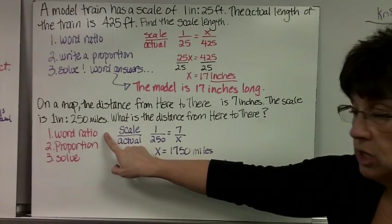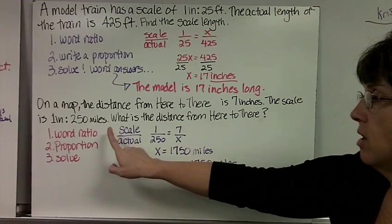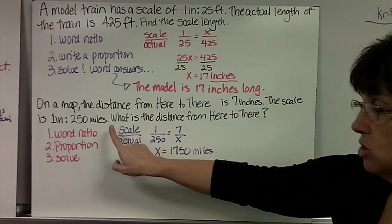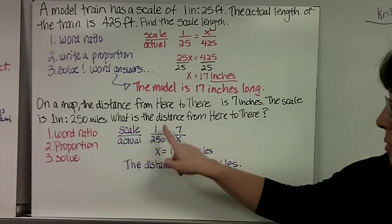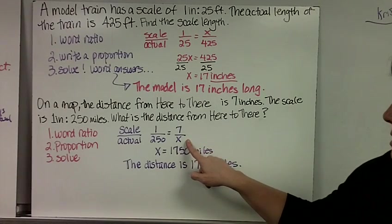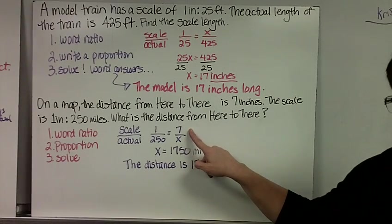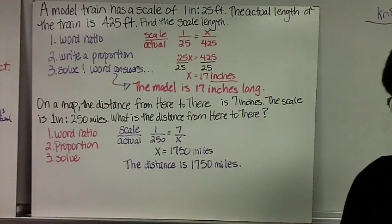Once again, we write our word ratio, our proportion, and then solve. The word ratio in these problems is always scale over actual. 1 to 250 from our problem equals 7 over x. The reason I know that the 7 goes in the numerator is because in the problem it says on a map it's 7 inches.